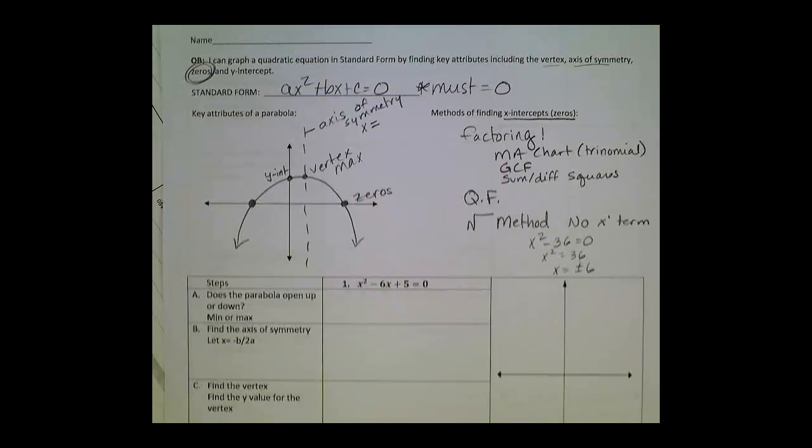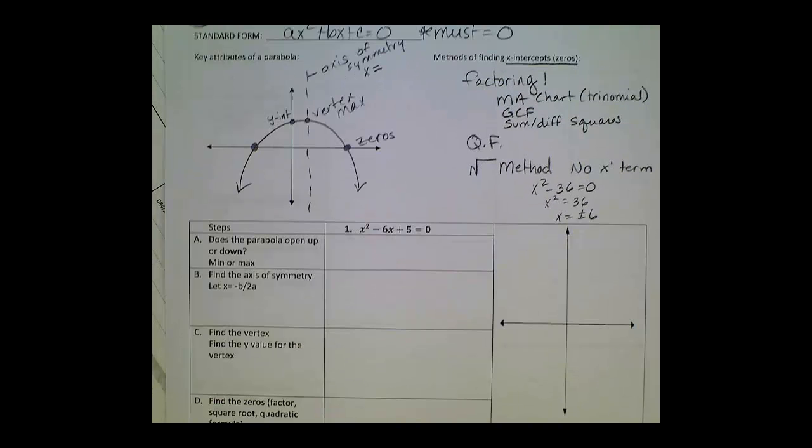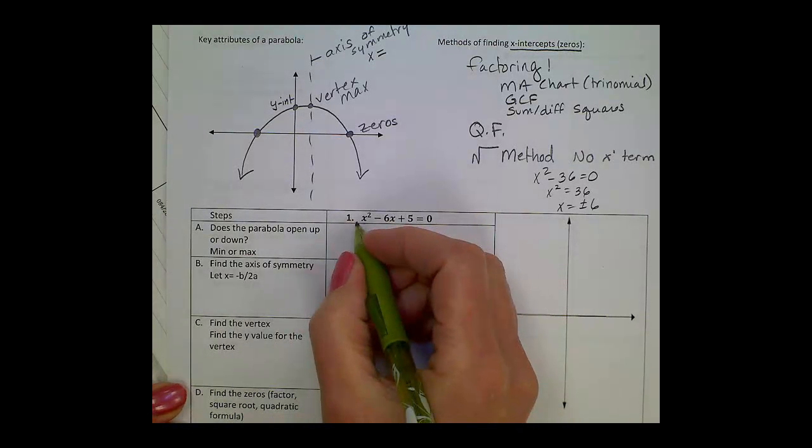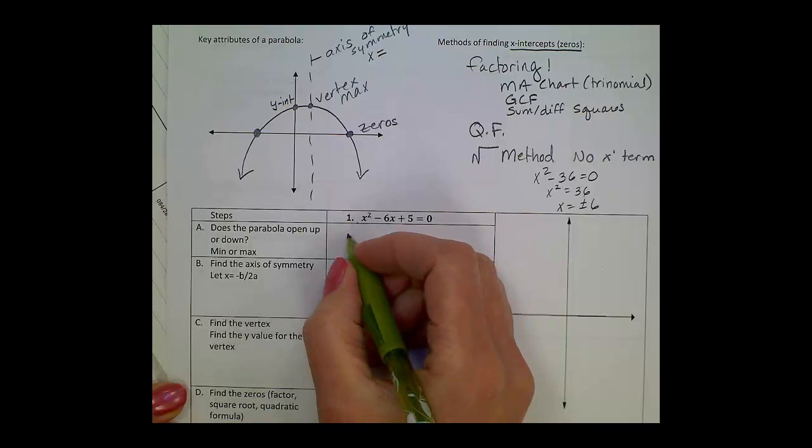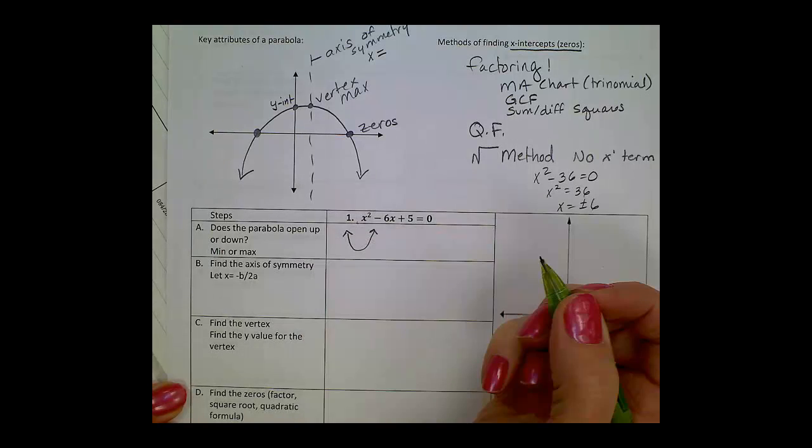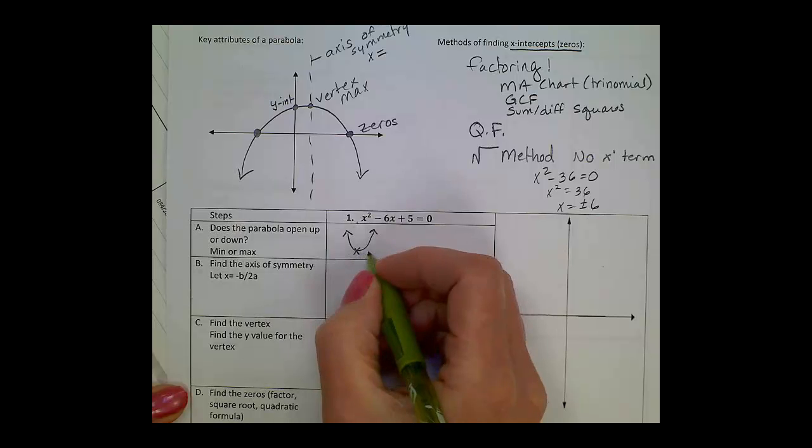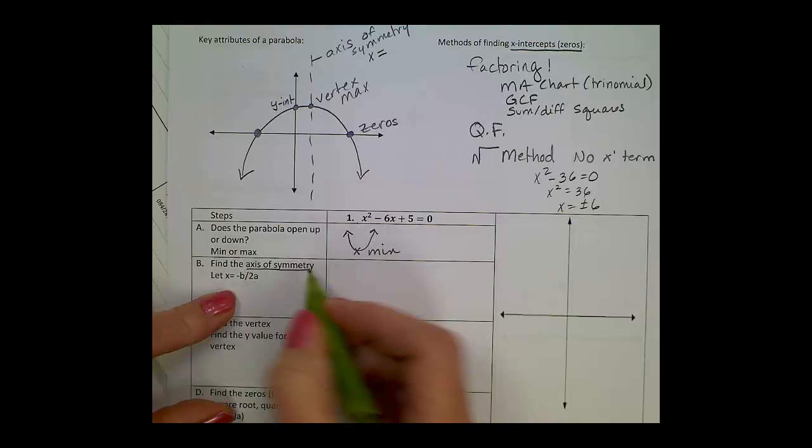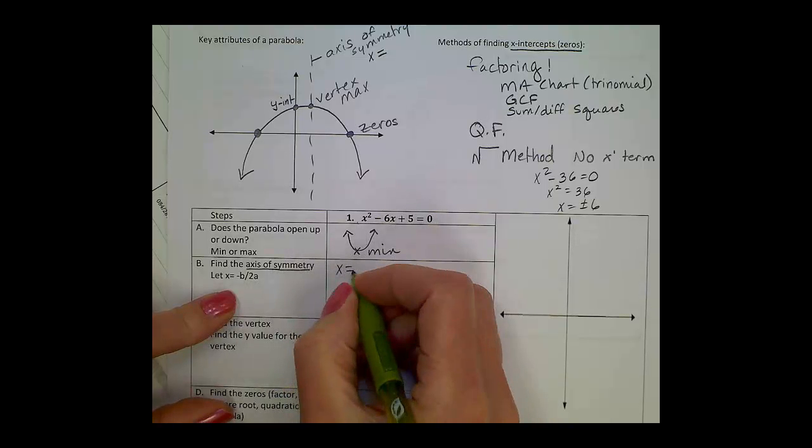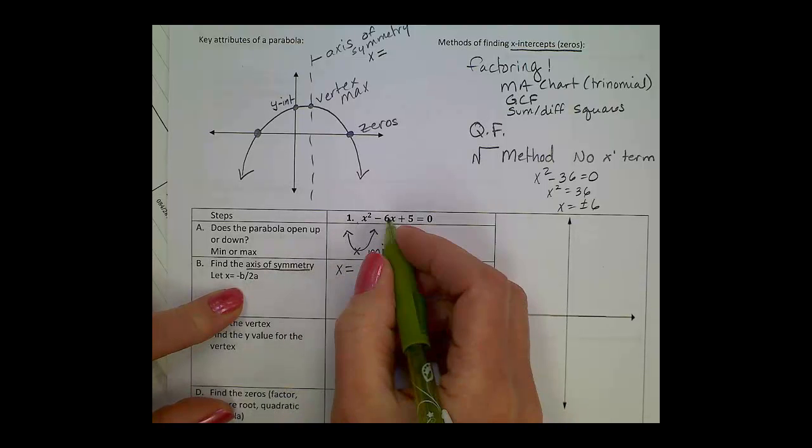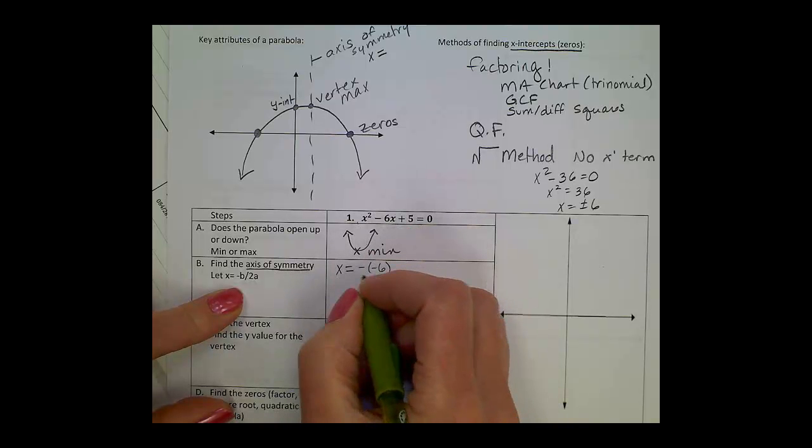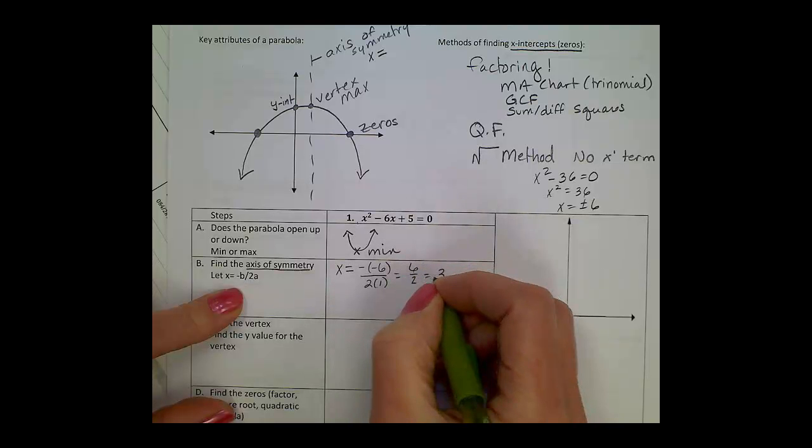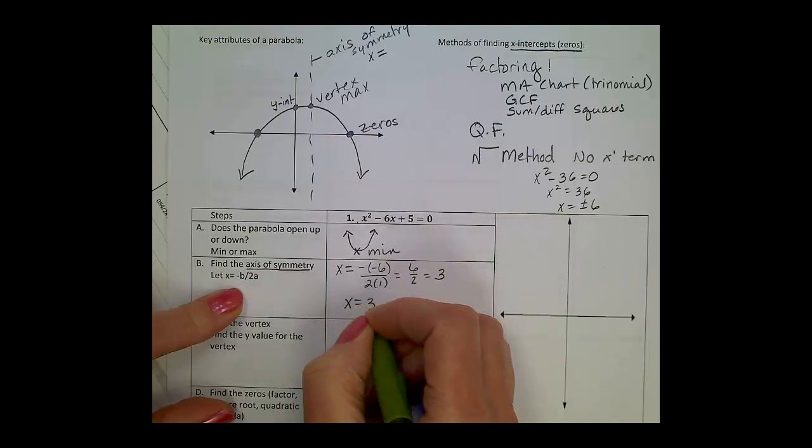So, let's try to graph our first example. Does the parabola open up or down? It's positive. I always tell my kids if it's a positive leading term, it's a happy parabola with a smiley face. The vertex down here would be a min. Next, we're going to find the axis of symmetry. All review from yesterday. We do negative b over 2a. b here is a negative 6, all over 2 times 1. So, we're going to get a positive 6 over 2, and we'll get 3. So, my axis of symmetry is x equals 3.